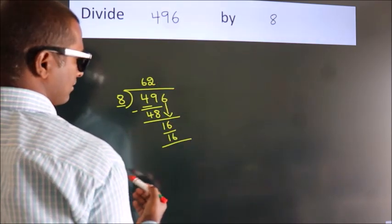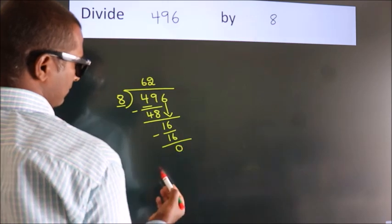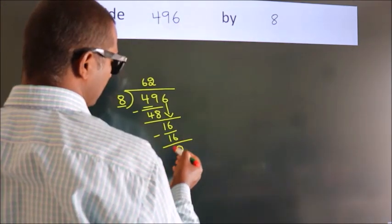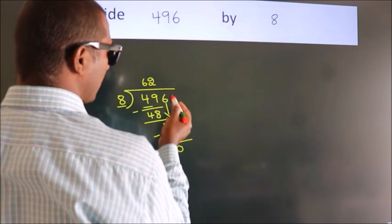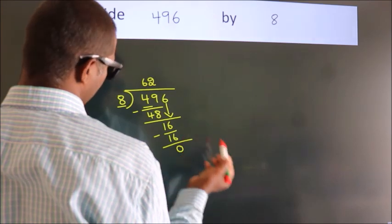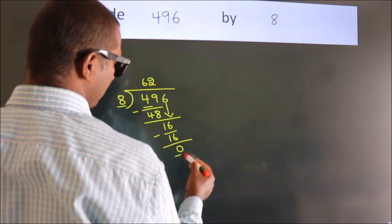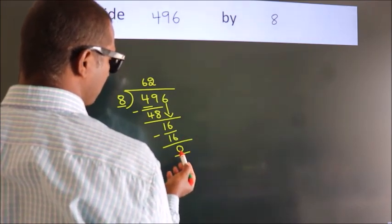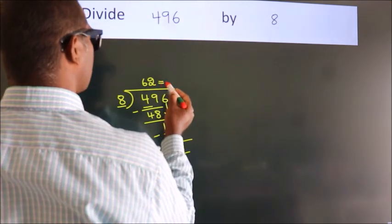Now we subtract and get 0. After this, there are no more numbers to bring down. We got remainder 0, so this is our quotient.